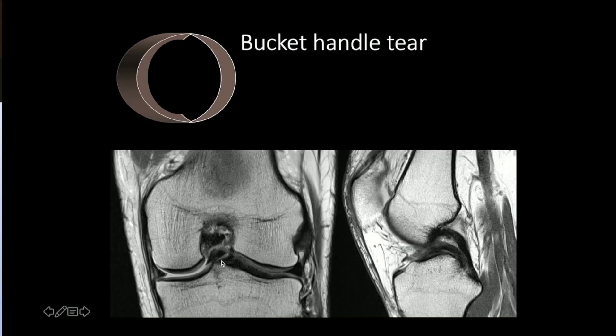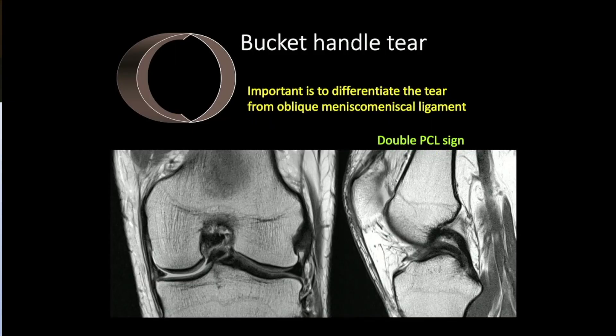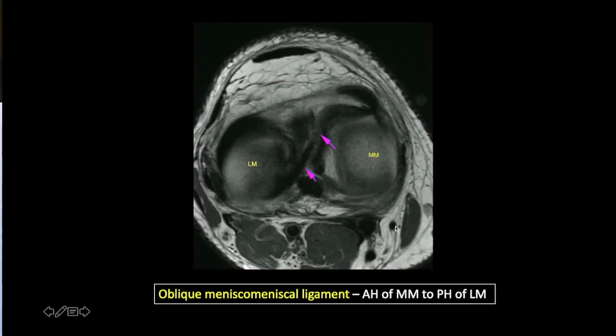In a bucket handle tear, a large longitudinal tear flips inside and, like a handle of a bucket, gets stuck in the notch because it's very difficult to return to its original position. Always remember to differentiate this from an oblique meniscomeniscal ligament, which is a normal variant. If you mistake the two, the patient will undergo unnecessary surgery. The oblique meniscomeniscal ligament runs from the anterior horn of the medial meniscus to the posterior horn of the lateral meniscus.